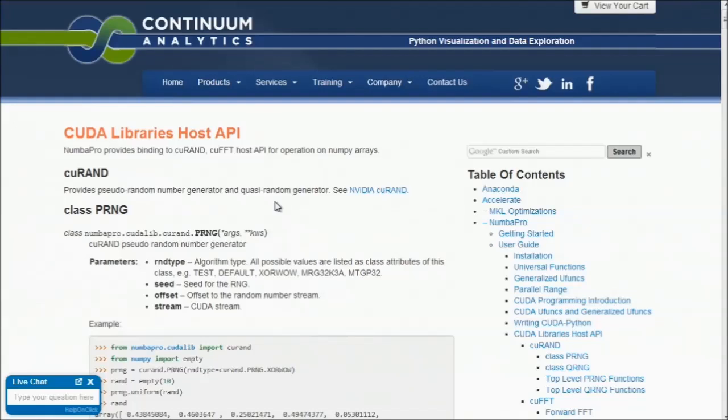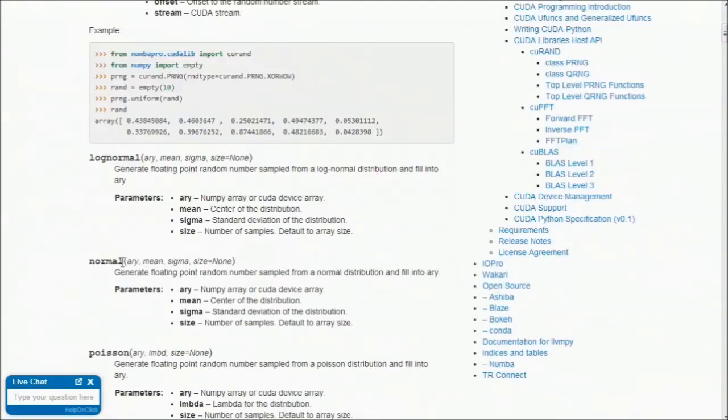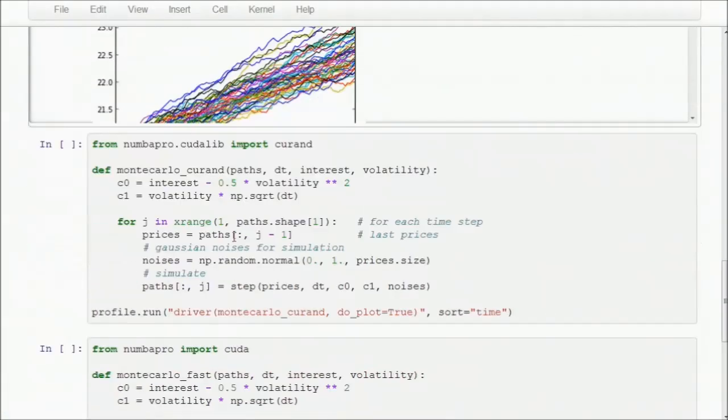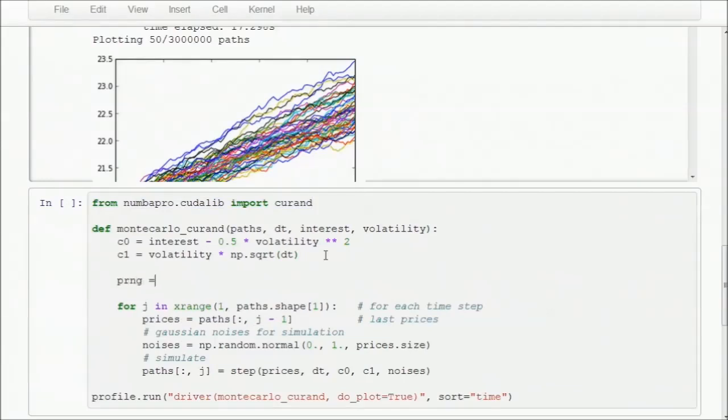If you look at the Continuum Analytics documentation for CUDA libraries, you will find details on the curand library, which we will use to replace the numpy randomNormal function. Our first step is going to be to import the curand library from NumberPro's CUDA library selection. We will then need to create a pseudo-random number generator as specified in the documentation using the following call.